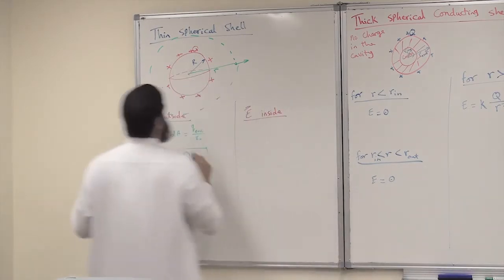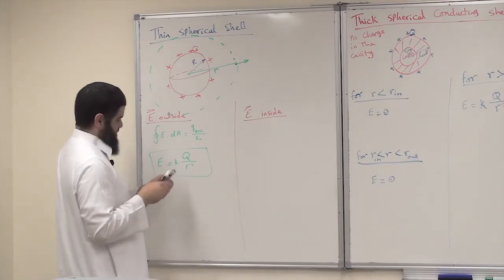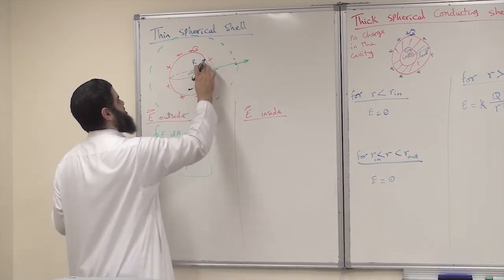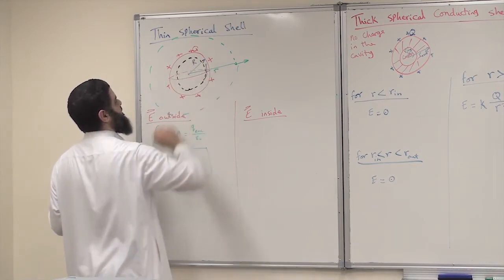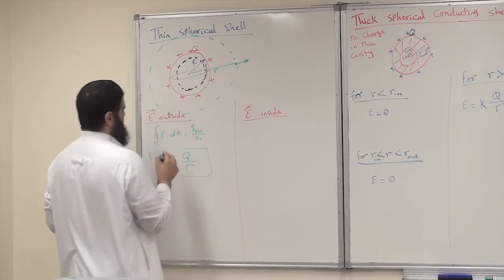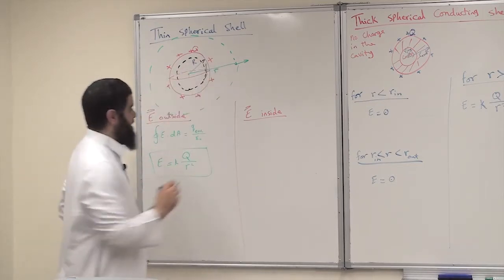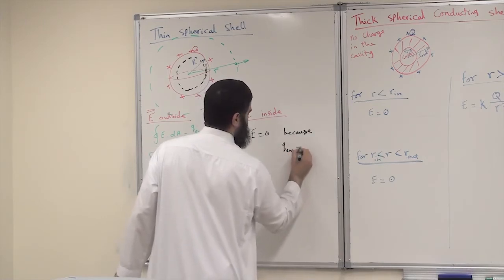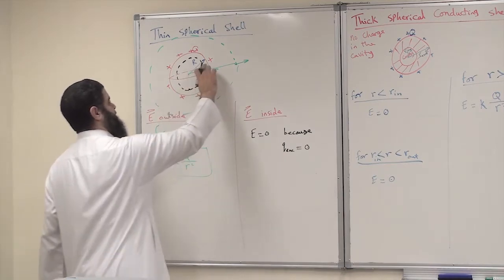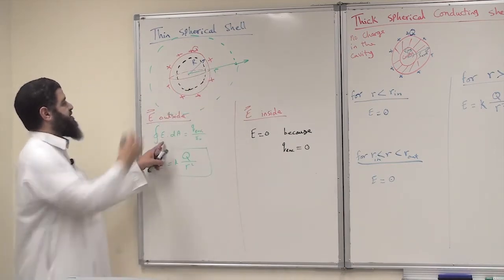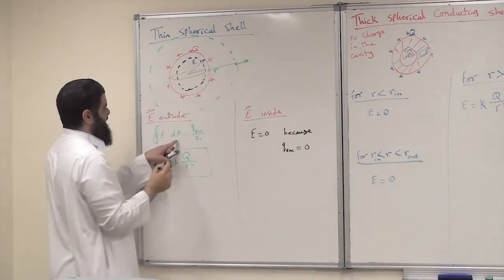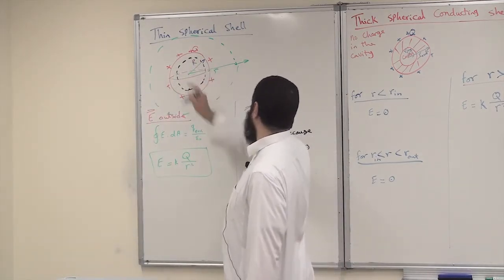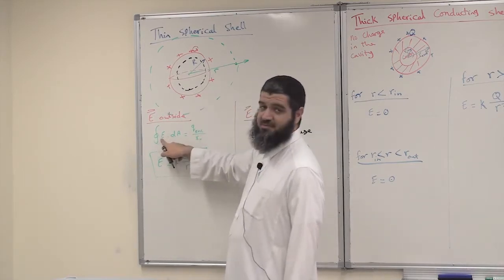Now let us ask: what is the electric field anywhere inside this spherical shell? We draw our Gaussian surface concentric with the real surface. If you look inside this Gaussian surface, you will find that q_enclosed equals zero. So E equals zero because q_enclosed is equal to zero. The electric field is uniform outside, and we end up with E equals kQ over r squared. Here the q_enclosed is equal to zero, and as a result E will be zero.